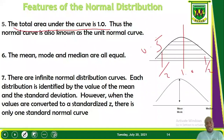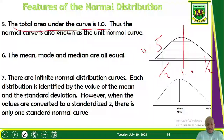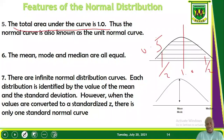The seventh feature is that there are infinite normal distribution curves. If the distribution is not standardized, you may have different means and different standard deviations, which will present different normal distribution curves. Each distribution is identified by the value of its mean and standard deviation. However, when values are converted to a standardized Z, that is the standard normal distribution, there is only one standard normal curve.